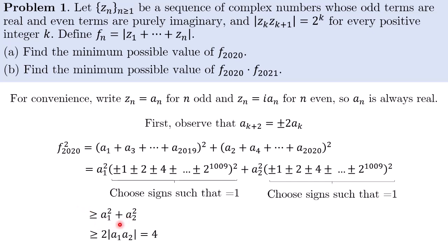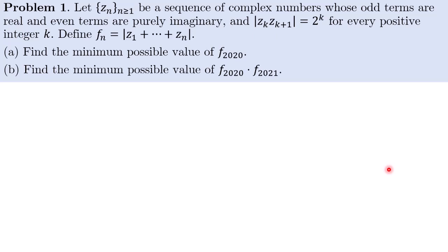To calculate that this thing is greater than or equal to twice of this. And we are given that this thing is equal to 4, which is the condition here. Therefore, we conclude that F of 2020 is greater than or equal to 2.